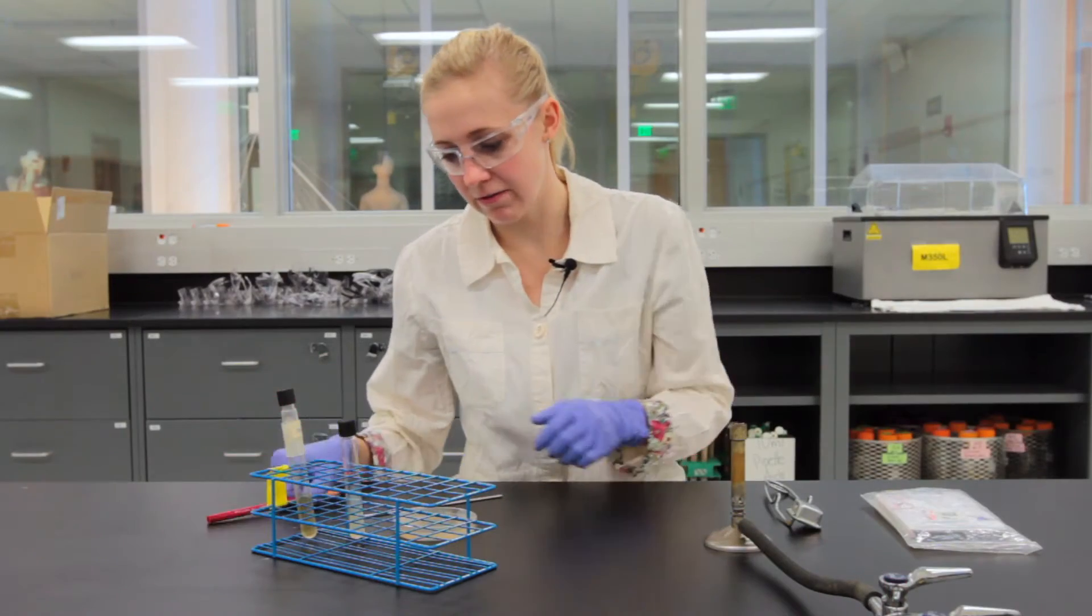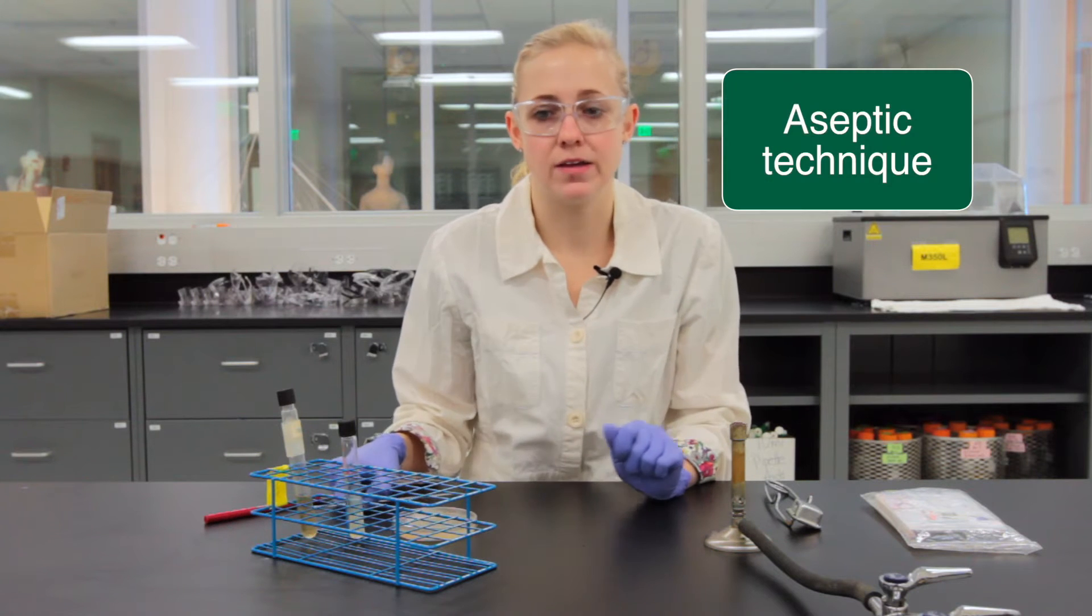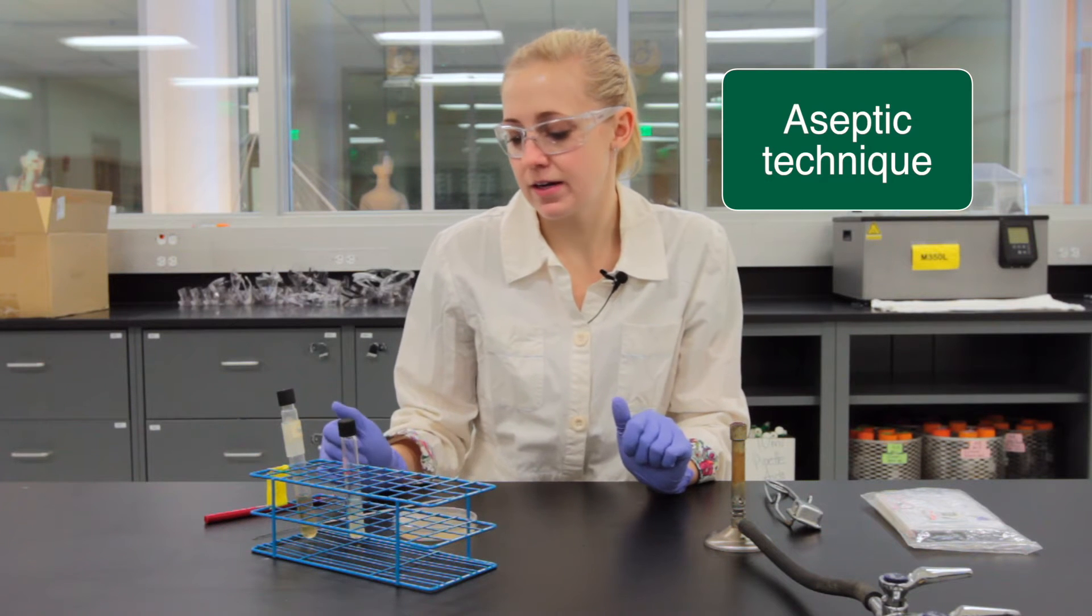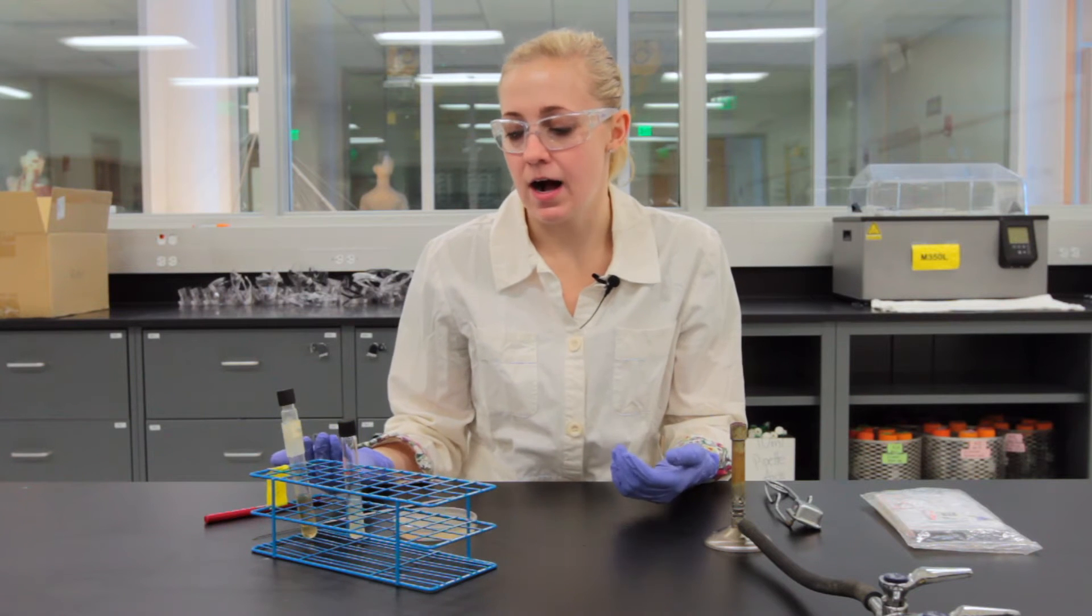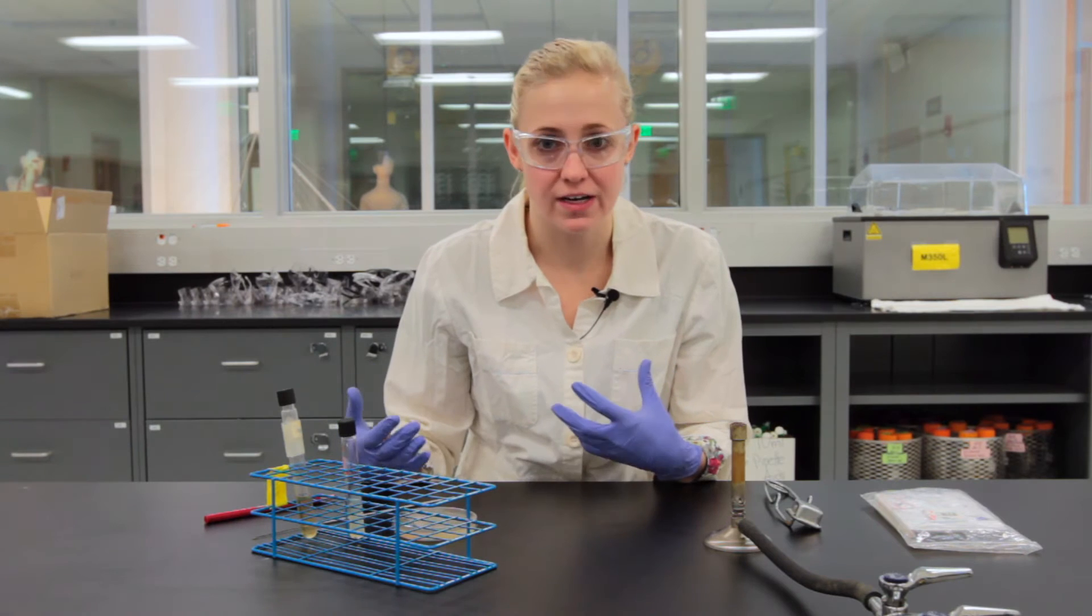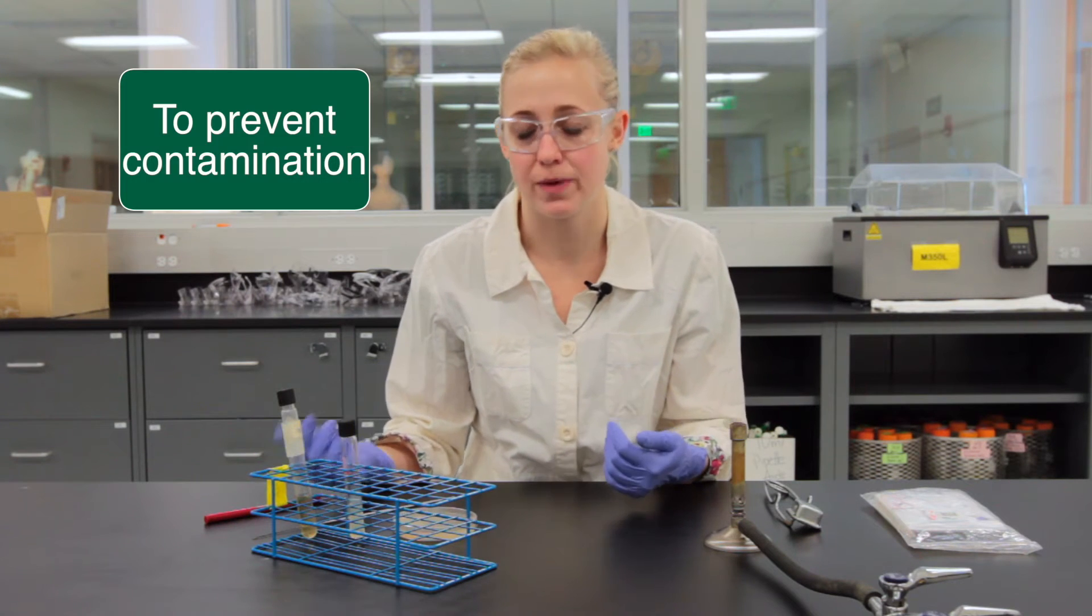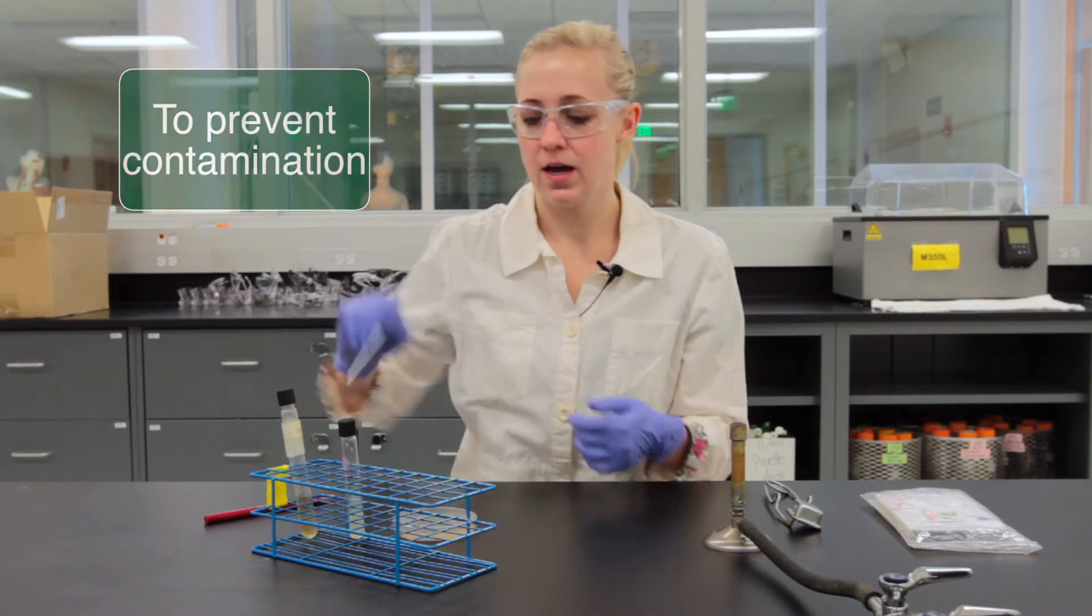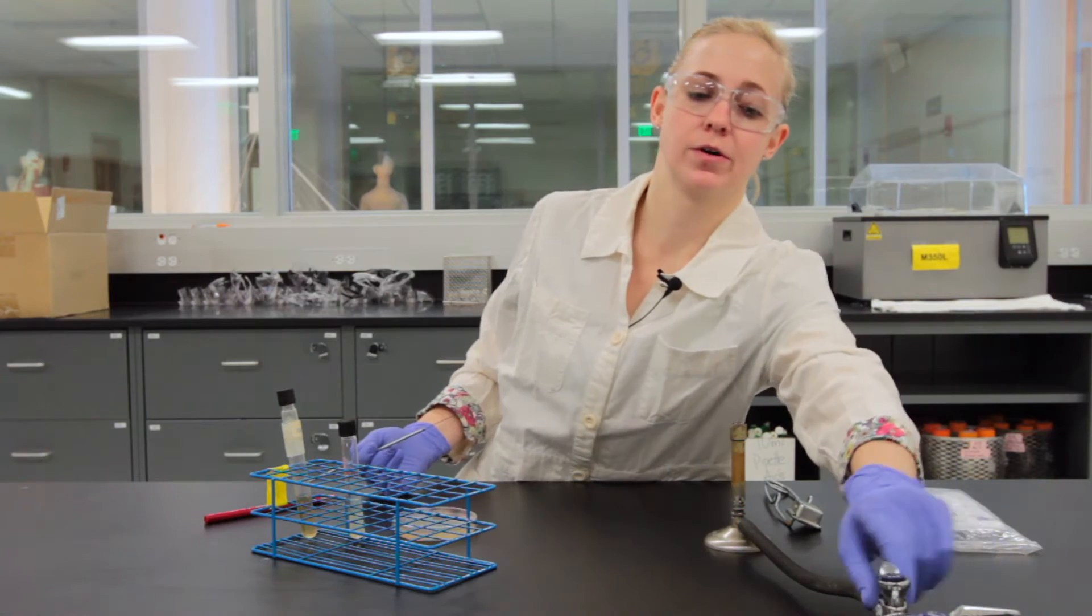Now that I have everything labeled what I'm going to do is use aseptic technique. Aseptic technique is the process of using heat to sterilize as well as keeping our caps on as long as possible or not touching anything to make sure that we don't have any extra bacterial transfer by any means. And so what I'll do is I'll start my Bunsen burner.